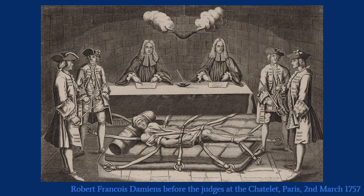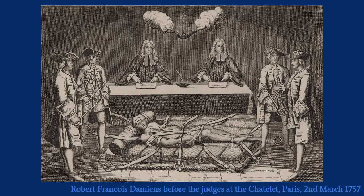Foucault starts Discipline and Punish with a description of the execution of Robert François Damiens, known as Damiens the Regicide — a man who tried to kill the king of France, and who in 1757 was executed in public in a really grotesque way. He was pulled apart. Foucault says this is an example of what punishment was like in 1757, but this is not how punishment remained.